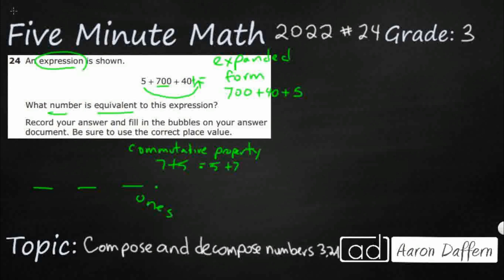On our answer document, when we fill this in, it's going to have three spots right next to the decimal. We don't really worry about numbers to the right of the decimal in third grade unless we're dealing with money. Ones is the first place, then there's the tens place, and then there's the hundreds place.